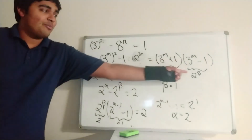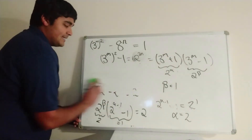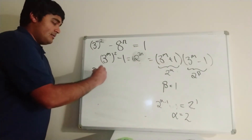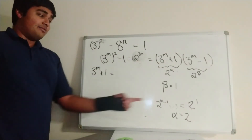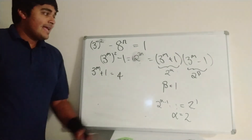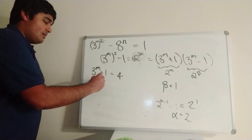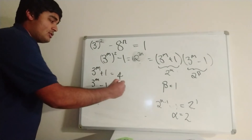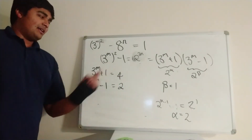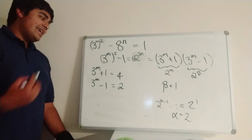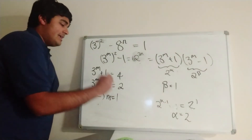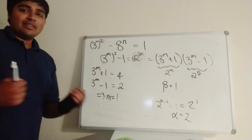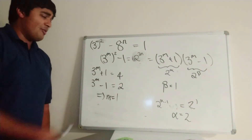Going back to where we introduced alpha and beta: 3 to the m plus 1 equals 2 to the alpha, which is 2 squared, which is 4. And 3 to the m minus 1 equals 2 to the beta, which is 2 to the 1, which is 2. So 3 to the m plus 1 is 4 and 3 to the m minus 1 is 2. It's very clear that m must equal 1 — we get 3 plus 1 equals 4 and 3 minus 1 equals 2. No other value of m will work.